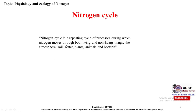The nitrogen cycle is a repeating cycle of processes during which nitrogen moves through both living and non-living things — the atmosphere, soil, water, plants, animals, and bacteria. In the nitrogen cycle, we will discuss all the phases through which nitrogen moves between these living and non-living components.